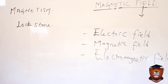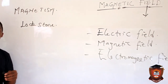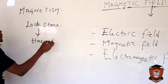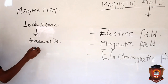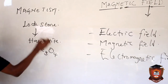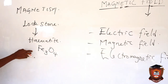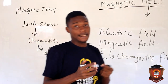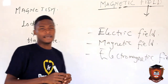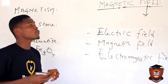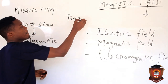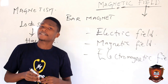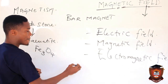Lodestone is the ore of what we now call magnets. In chemistry, we have hematite, with the chemical formula Fe₃O₄ — hematite is the ore of magnets. Now whenever we talk about magnets in the laboratory and want to study magnetism or magnetic field, we normally make use of what we call the bar magnet, because it is easily accessible.